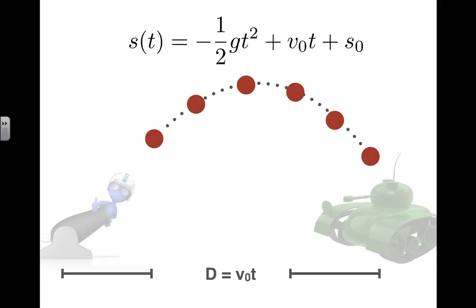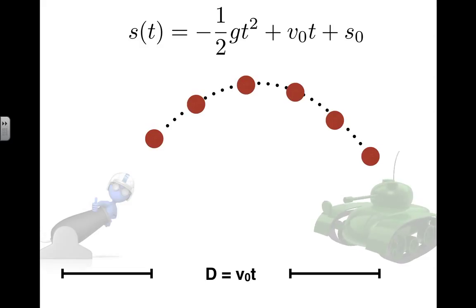So just to reiterate, the downfield distance that he could travel is given by v zero t, and that's because we remember that distance is equal to the rate times the time. So now we have a formula that we can use if we'd like to determine the position of a particle or object that has this type of projectile motion.